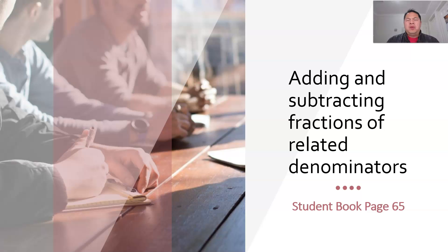Basically when we say related denominators means the denominators are multiples of each other. So you still remember what are multiples. Like for example, the multiples of 3 will be 3, 6, 9, 12, 15, 18, 21, and so forth. Okay, let's move on.